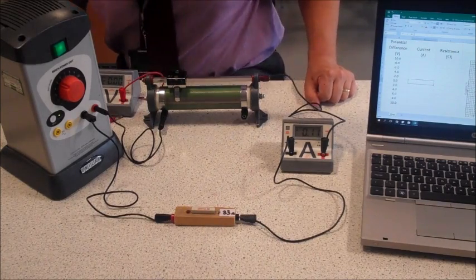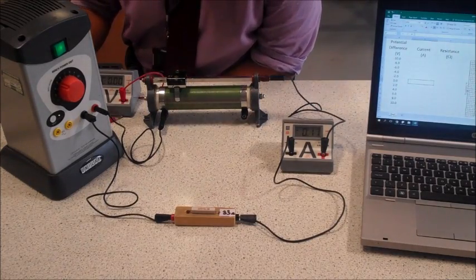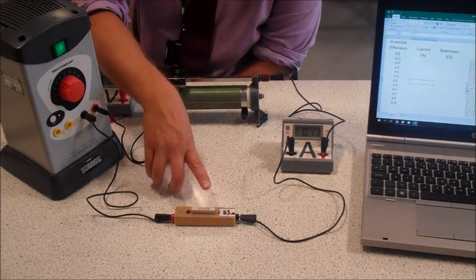Okay, welcome to the AQA Physics Required Practical. This is the current voltage or IV characteristics, and the first one that we're doing today is the resistor.